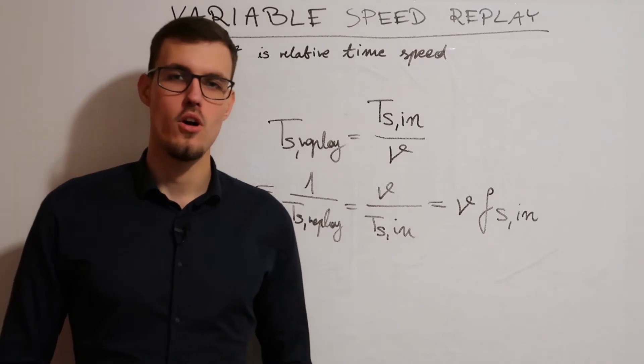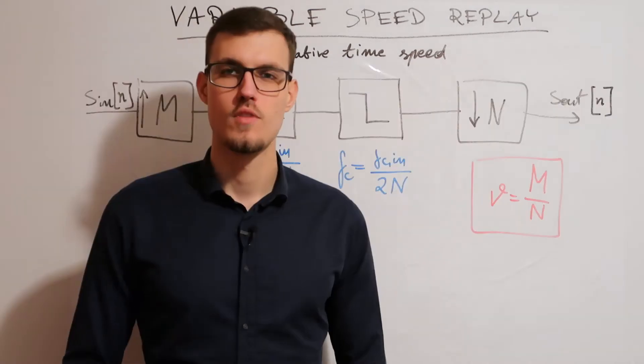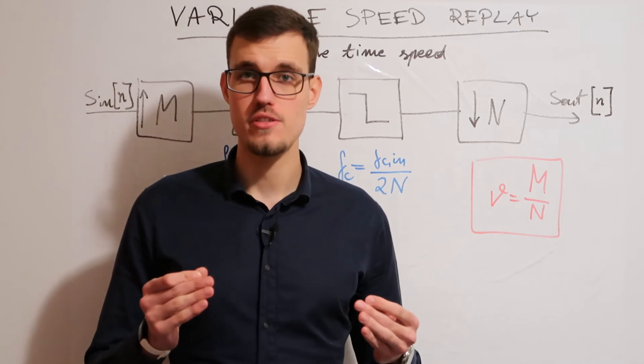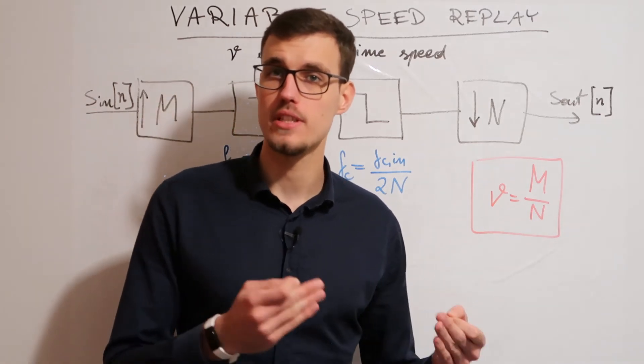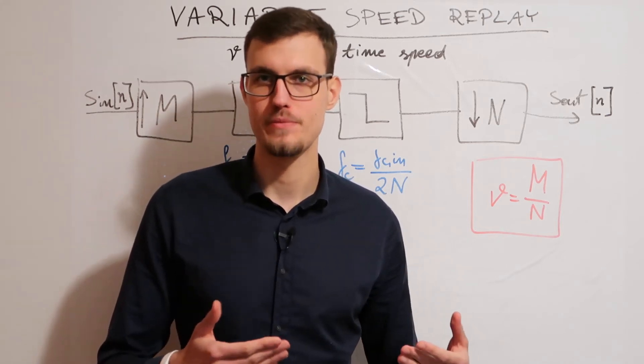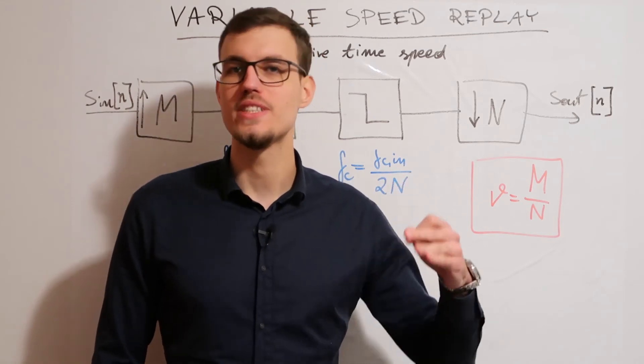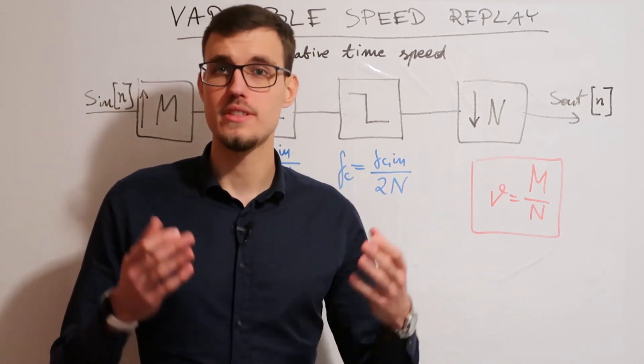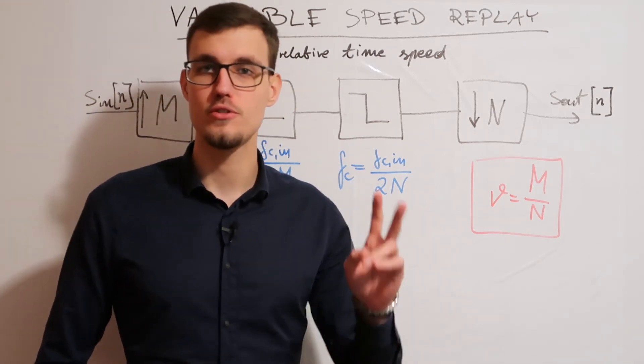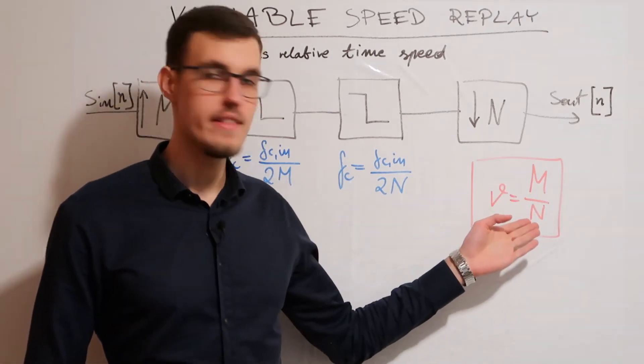This is the basis of the variable speed replay algorithm that I will discuss now. We want to create an algorithm that effectively changes the frequency of the signal we put in, therefore creating the effect of different time flow speed. We denote V as the relative speed of the time flow. In order to do this effectively, we need to present V as a ratio of two integers, namely M and N.